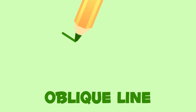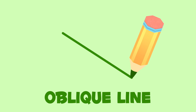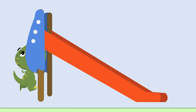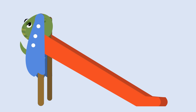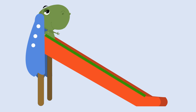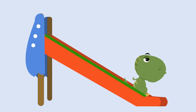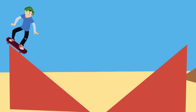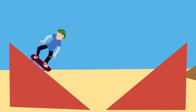This is an oblique line. Oblique lines look like this slide or like this skateboarding ramp.